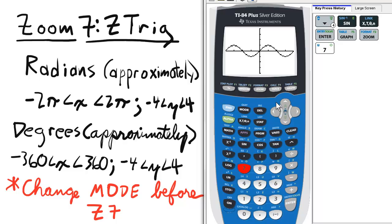Now this is good. The default settings for the 7 Z Trig option are great because most instructors want to see two periods of sine and cosine, which is what this will give you in degree or radian mode.